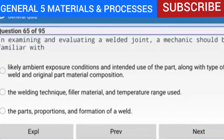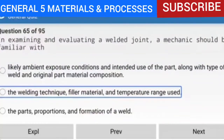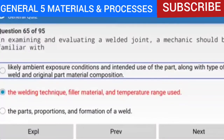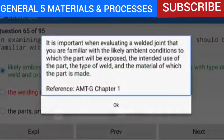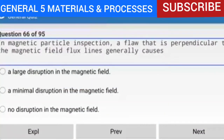Question 65 of 95: In examining and evaluating a welded joint, a mechanic should be familiar with the likely ambient exposure conditions and intended use of the part, along with the type of weld and original part material composition. It is important when evaluating a welded joint to be familiar with the likely ambient conditions, intended use, type of weld, and the material of which the part is made.